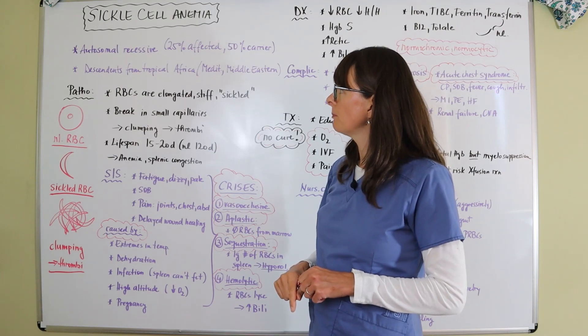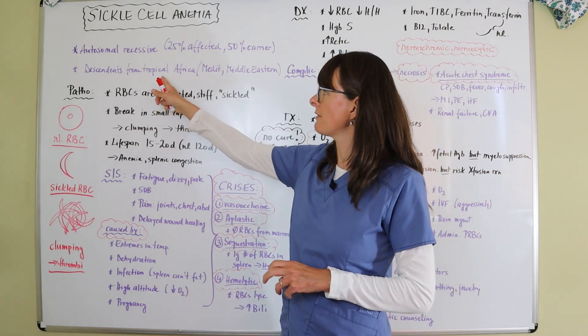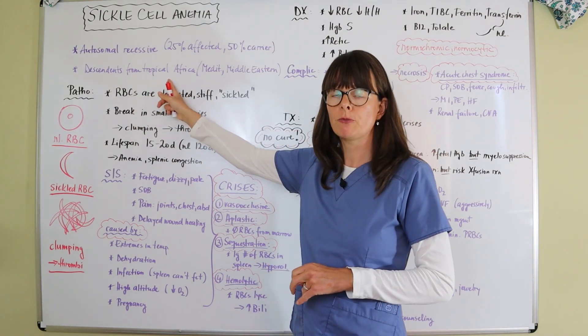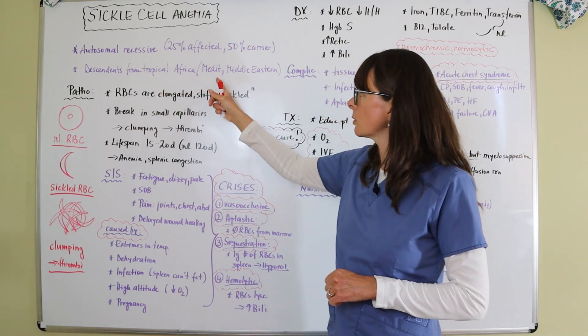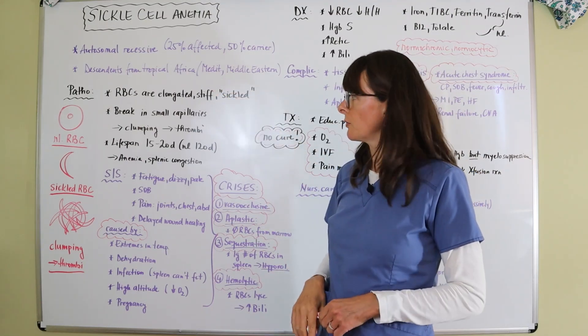Patients at risk for developing sickle cell anemia are descendants from tropical Africa, and that's the majority of patients at risk, but also people of Mediterranean and Middle Eastern descent, but to a lesser degree.